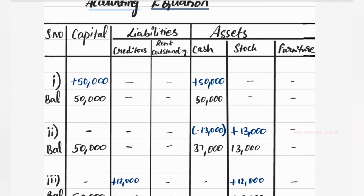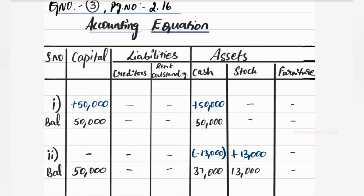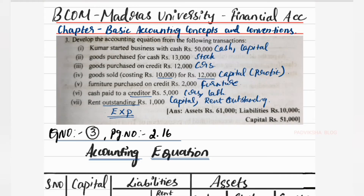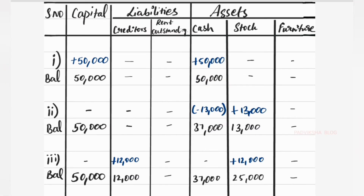Now we will start posting the answers — the answers are already written and I will explain them. First transaction: Kumar started business with cash ₹50,000. So capital increases by ₹50,000 and cash increases by ₹50,000. The roman numeral entry is a balance; roman letter in blue and balance in black for good clarity and marks.